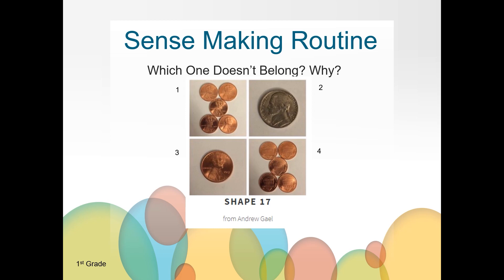Number two doesn't belong because it's the only square with a square. Number two doesn't belong with a nickel, where the other boxes use pennies. Number three doesn't belong because the value of the coin is one cent, while the other boxes have a value of five cents. Number four doesn't belong because the coins are showing tails, while the other three are showing heads.